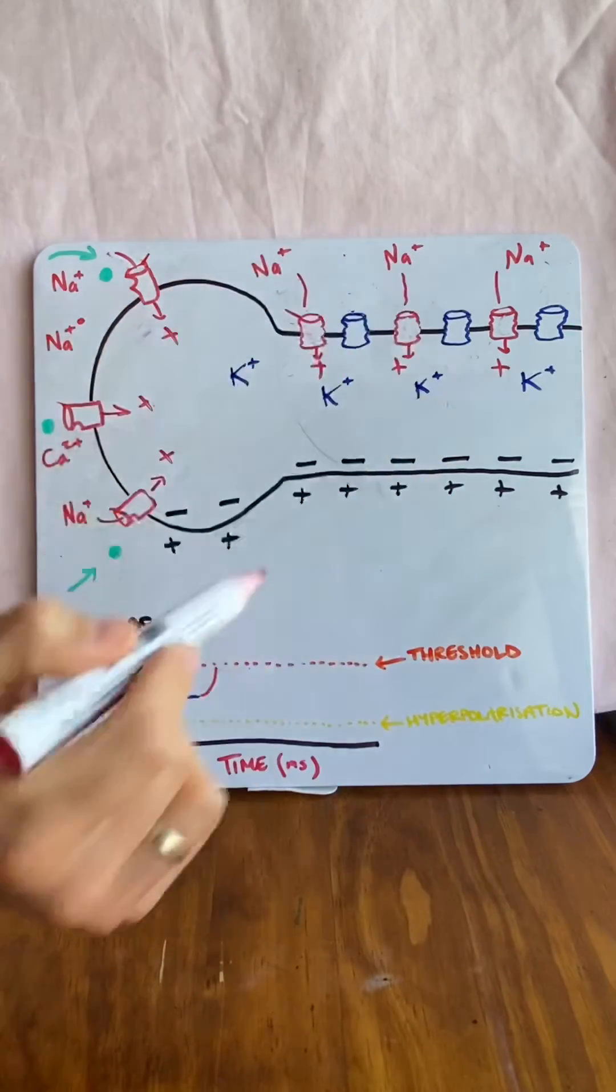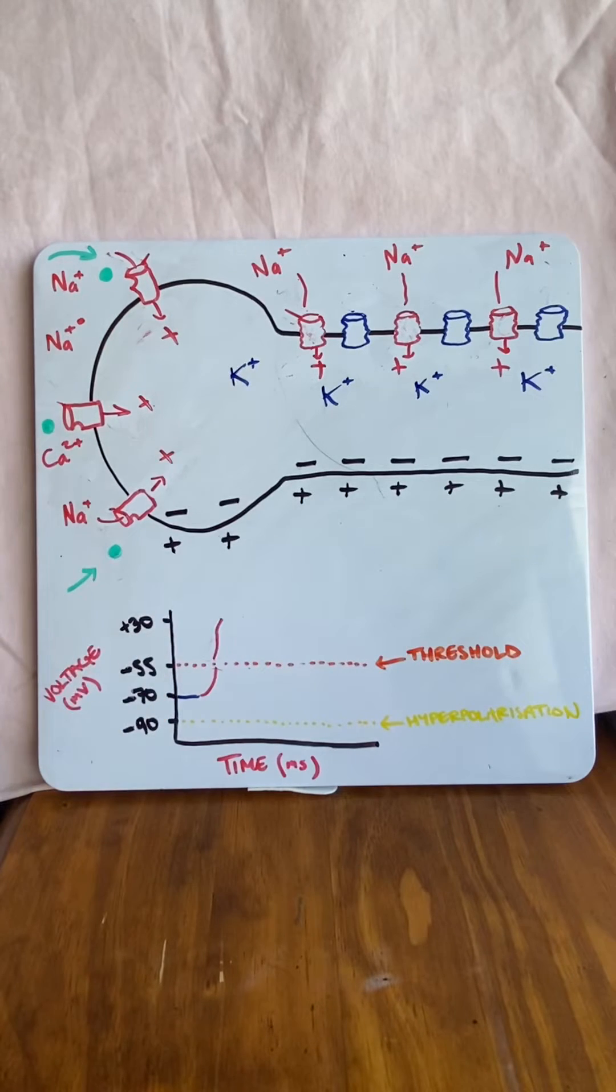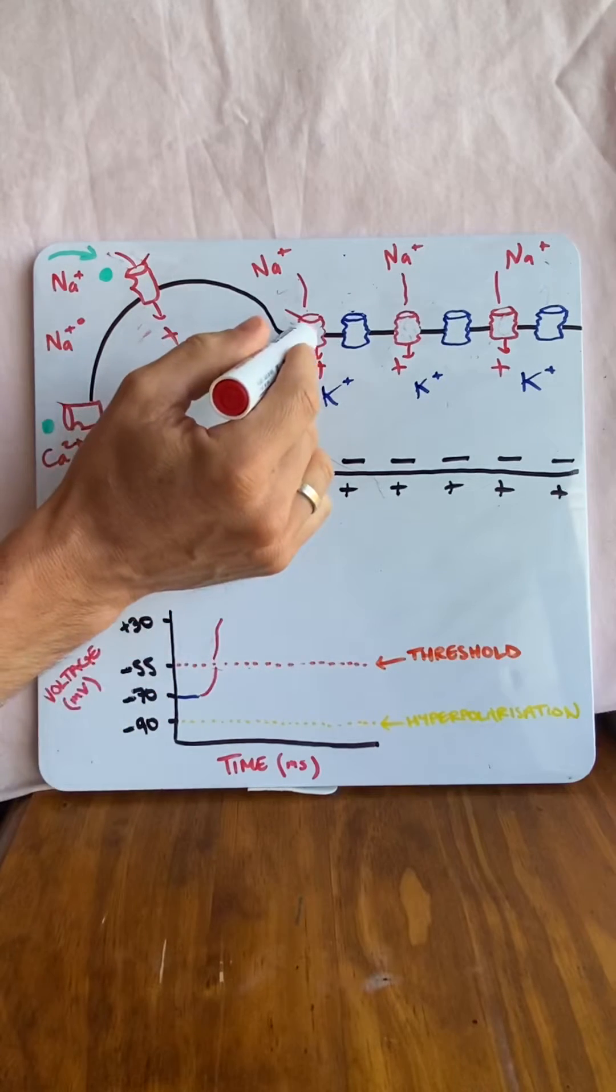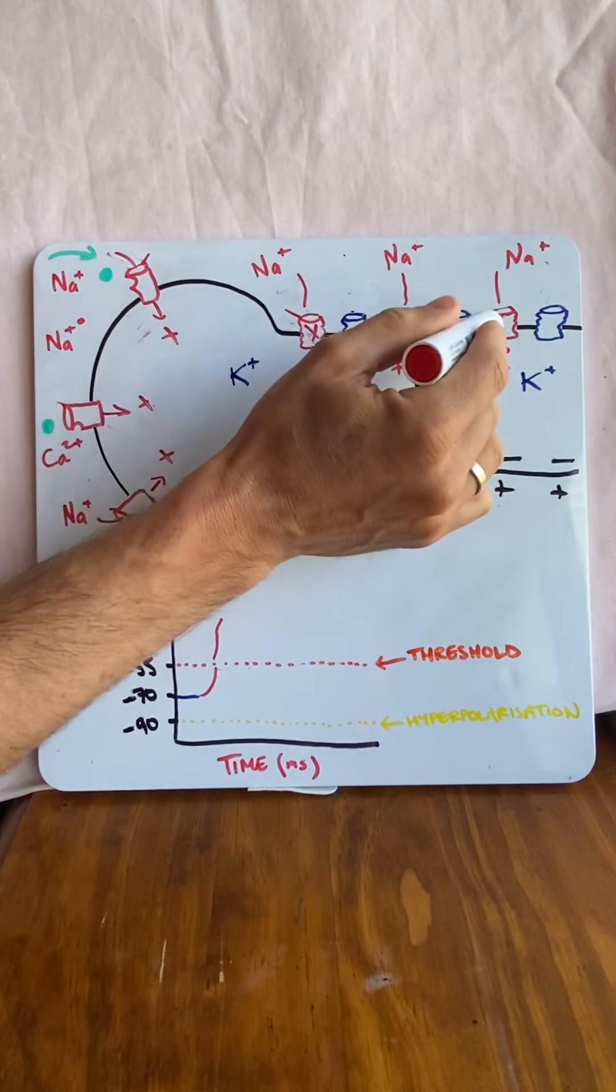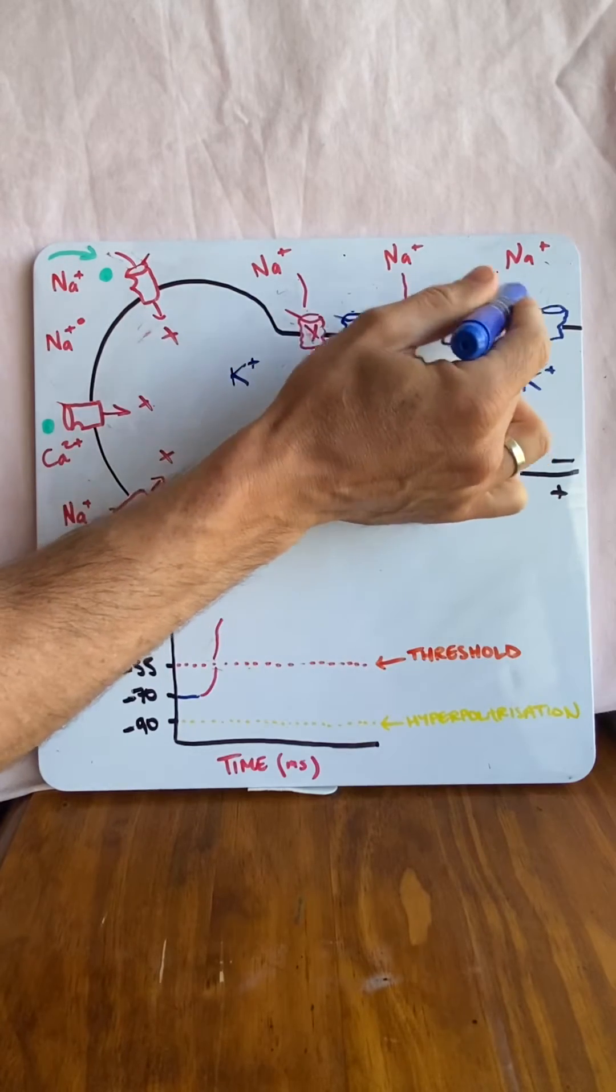Now, if enough positive sodium moves in that it goes from negative 55 up to positive 30, this is the key to close the gates and the gates shut. But it's also the key to open up some more channels, potassium channels,